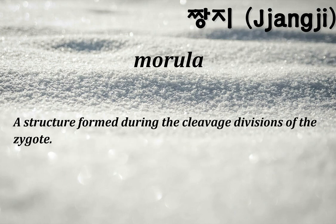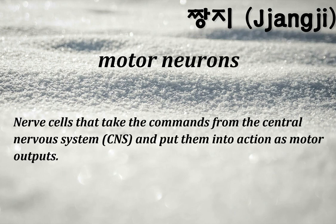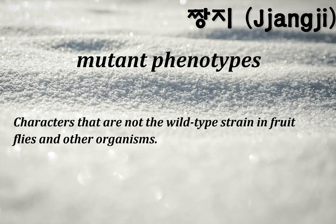Morula: a structure formed during the cleavage divisions of the zygote. Motor neurons: nerve cells that take the commands from the central nervous system (CNS) and put them into action as motor outputs. Mutant phenotypes: characters that are not the wild type strain in fruitflies and other organisms.